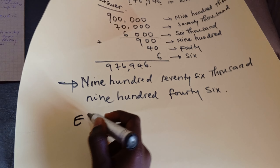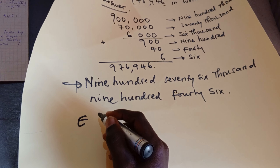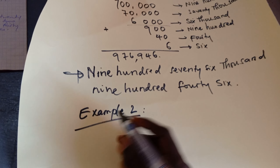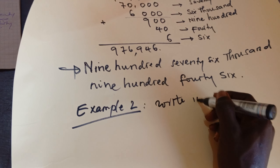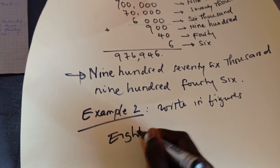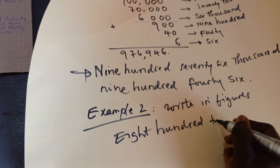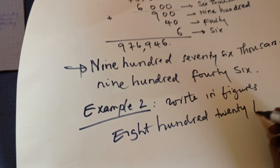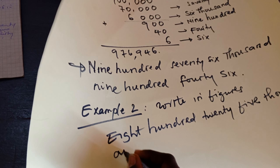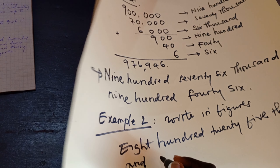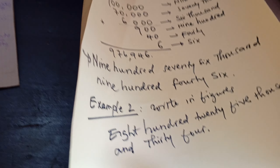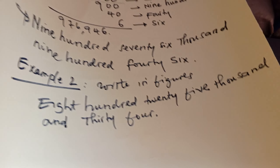Example number two asks us to change from words into numbers — to write in figures. The number given in words is: eight hundred twenty-five thousand and thirty-four. The question asks you to put it in figures.